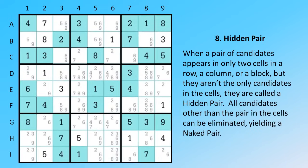When a pair of candidates appears in only two cells in a row, a column, or a block, but they aren't the only candidates in the cells, they are called a hidden pair. All candidates other than the pair in the cells can be eliminated, yielding a naked pair.